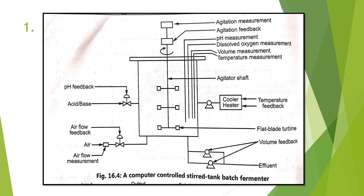Agitators consist of one or more impellers mounted on a shaft. Different types of blades are used according to requirements, and it is rotated with the help of an electric motor. This is the diagram of a computer-controlled stirred tank batch fermenter, called computer-controlled because it has control of the computer and is connected to the electric supply.